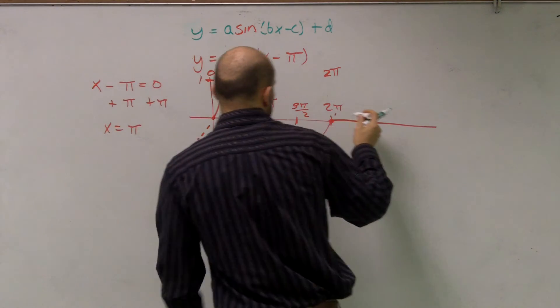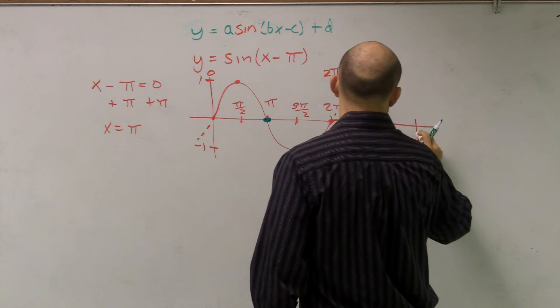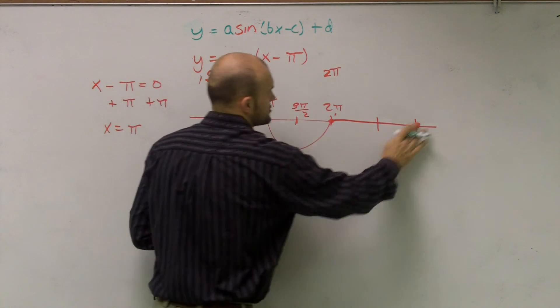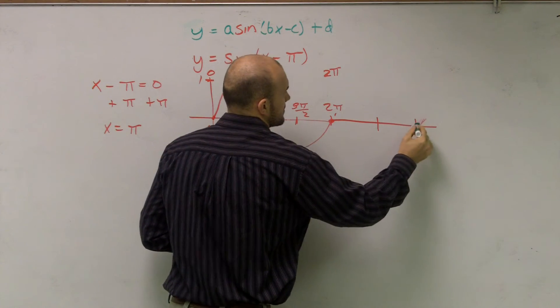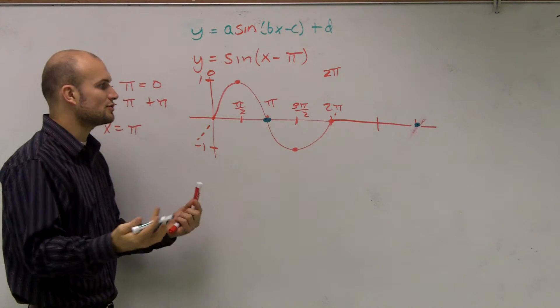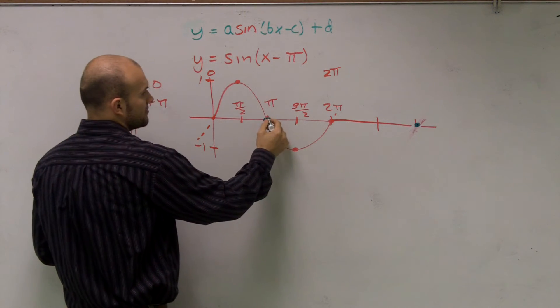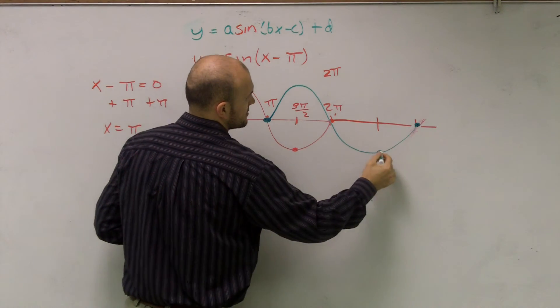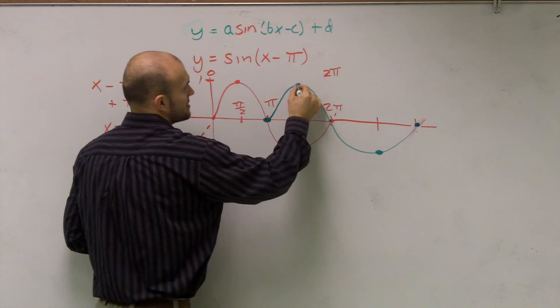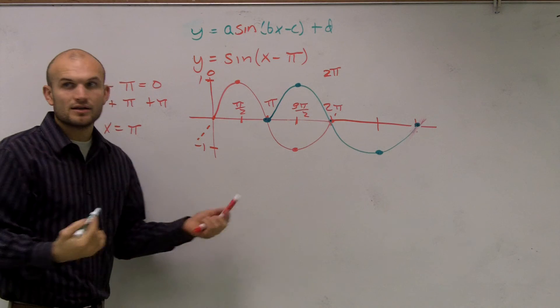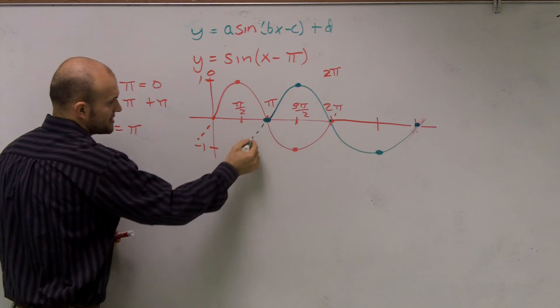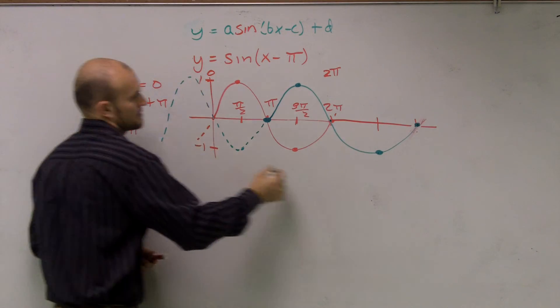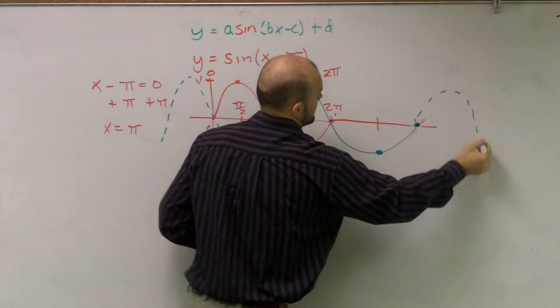And then instead of its end point at 2π, now the end point's going to be at 3π. So now, I'm still going to graph the exact same graph, but it's going to go up, it's going to go down, cross, minimum, intersect, maximum. Then, like I said, it says two periods, right? So you can continue. Still going to the left. Okay?